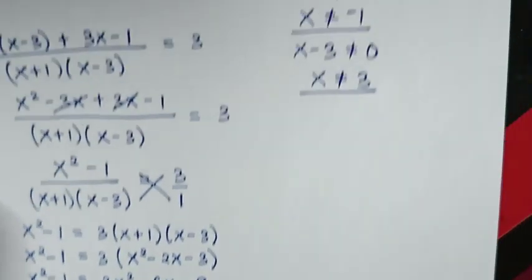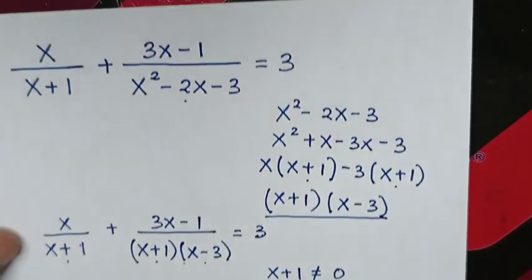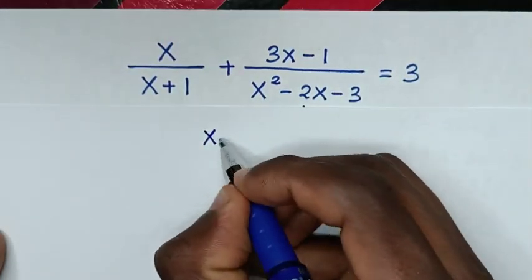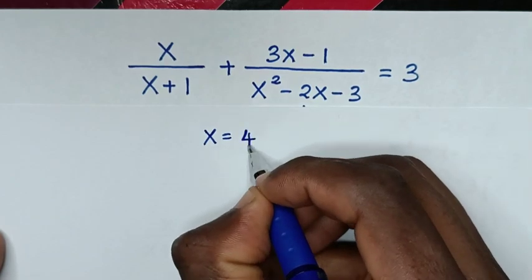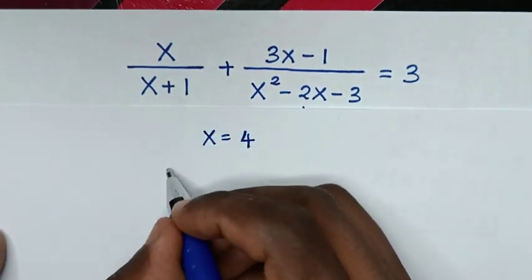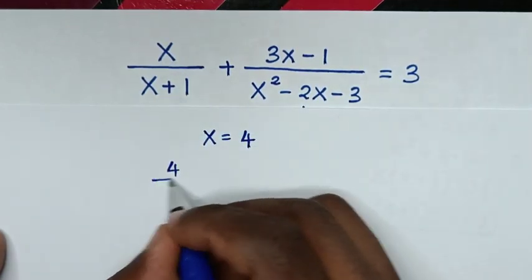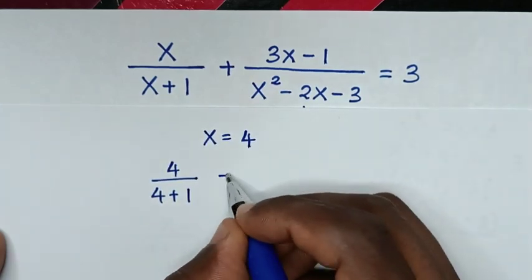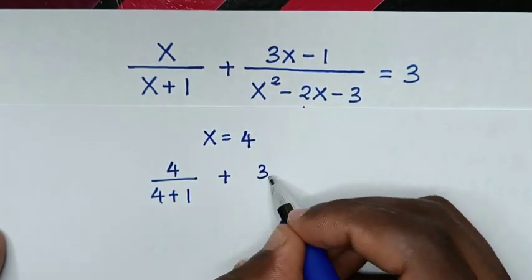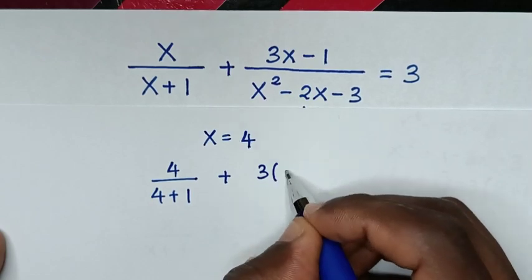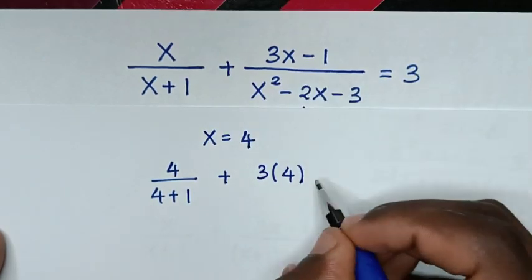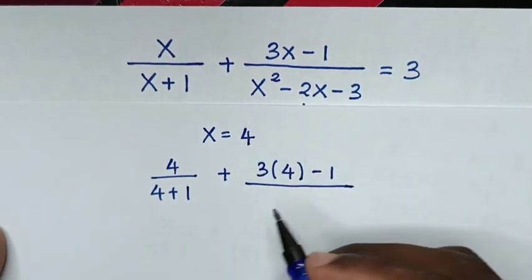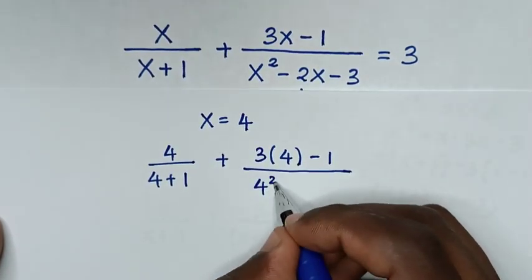Now to check if the value of x is correct, from our original problem we substitute x equals 4. It will be 4 over (4 plus 1), then plus (3 times 4 minus 1) over (4 squared minus 2 times 4 minus 3).